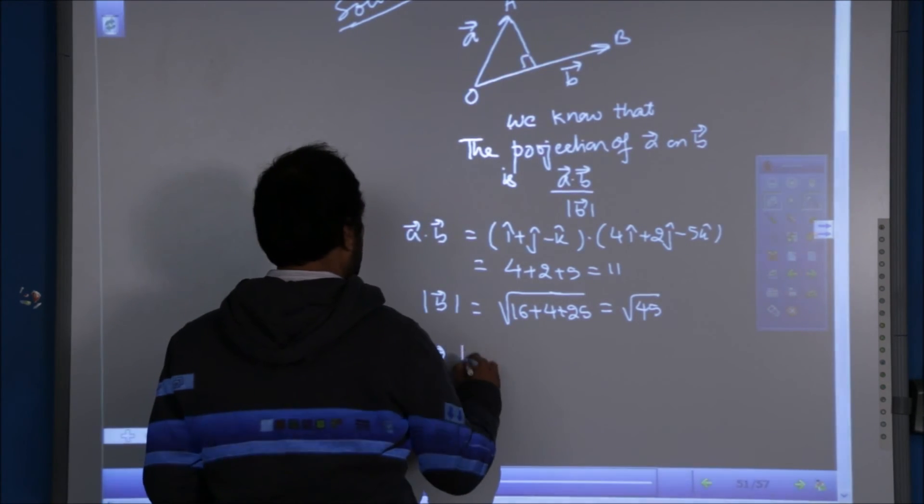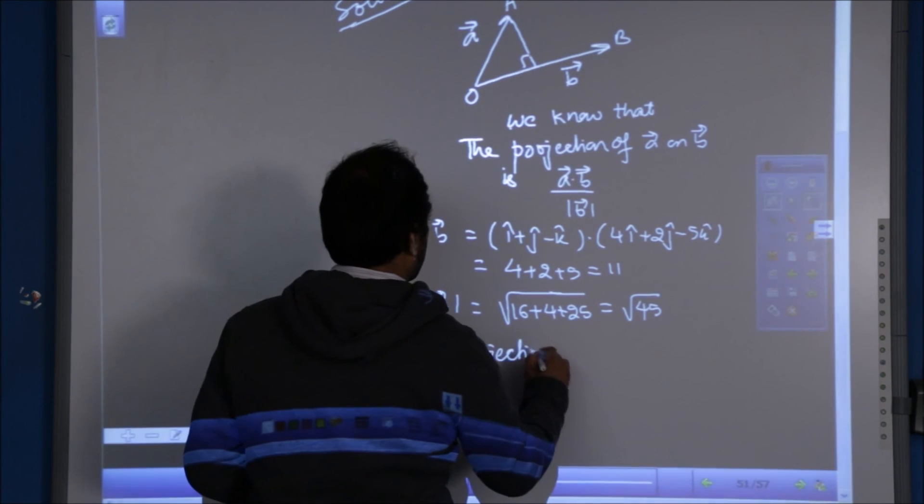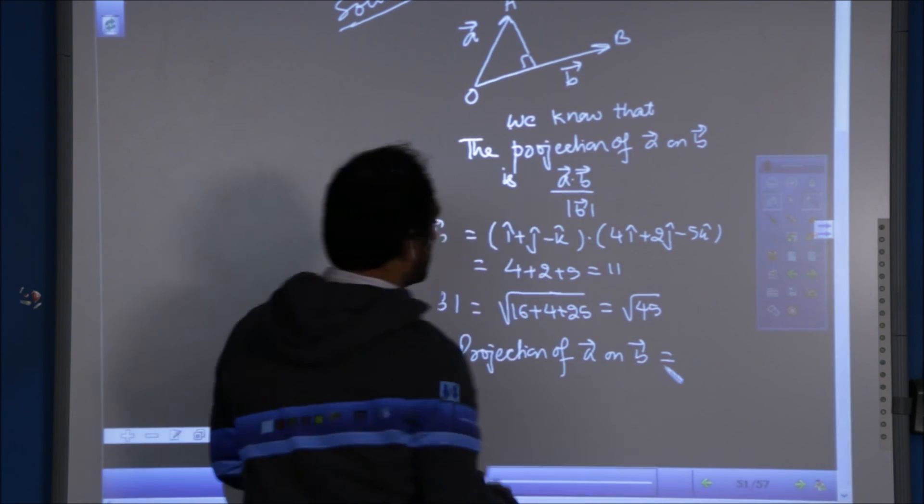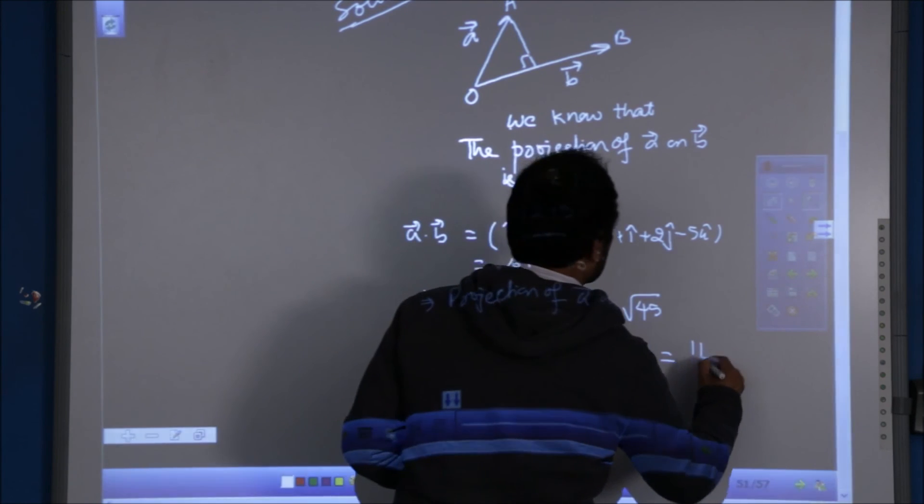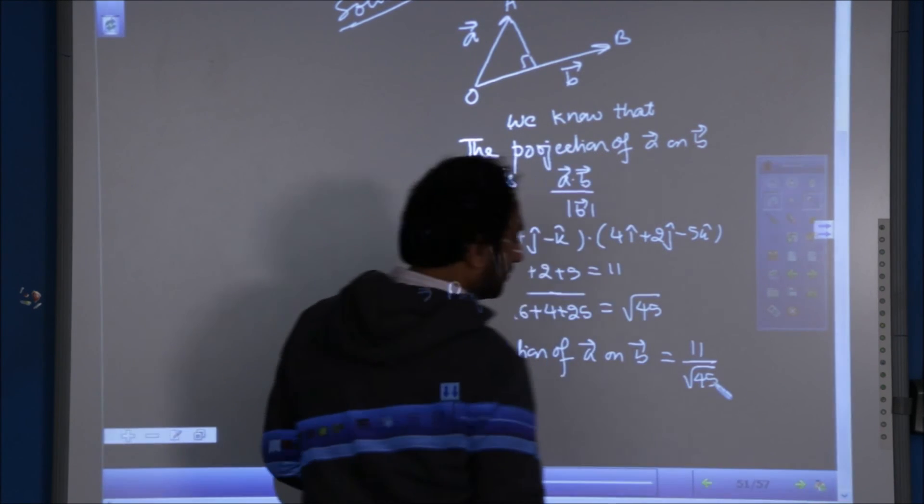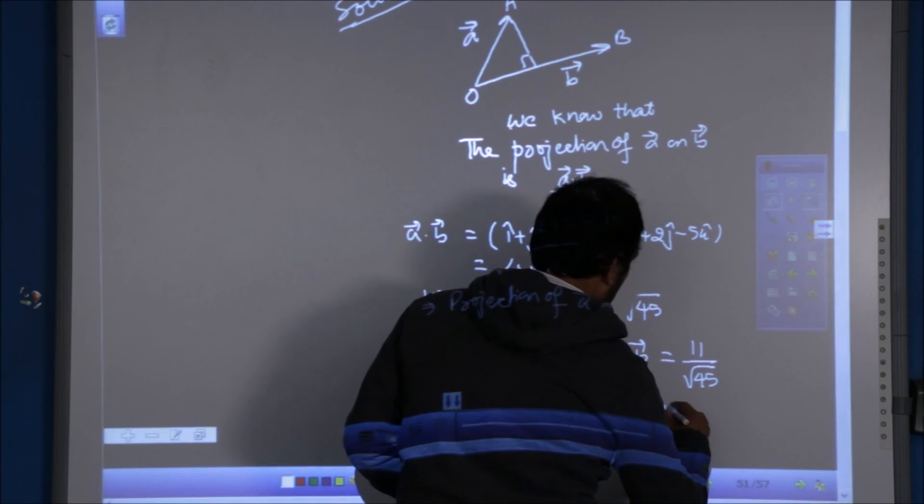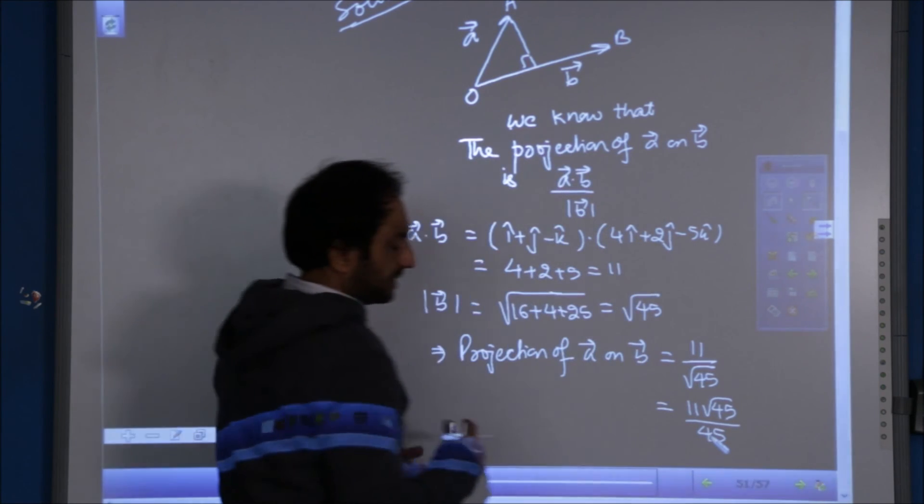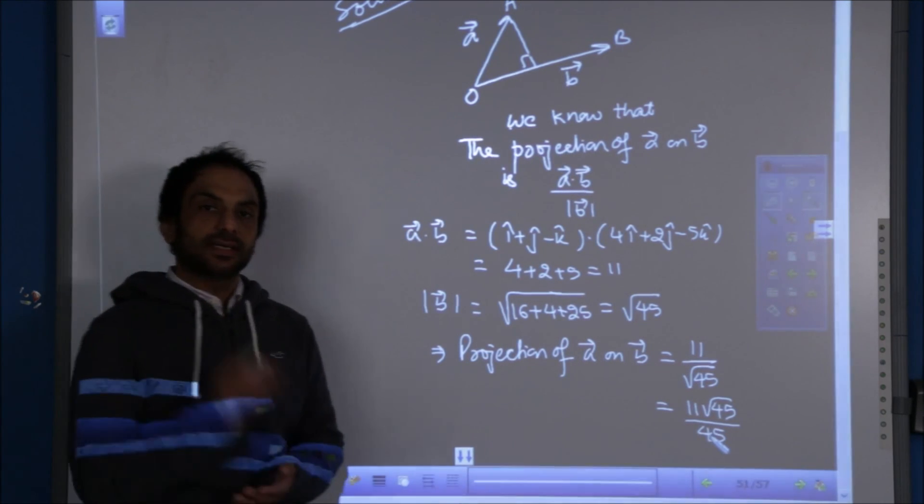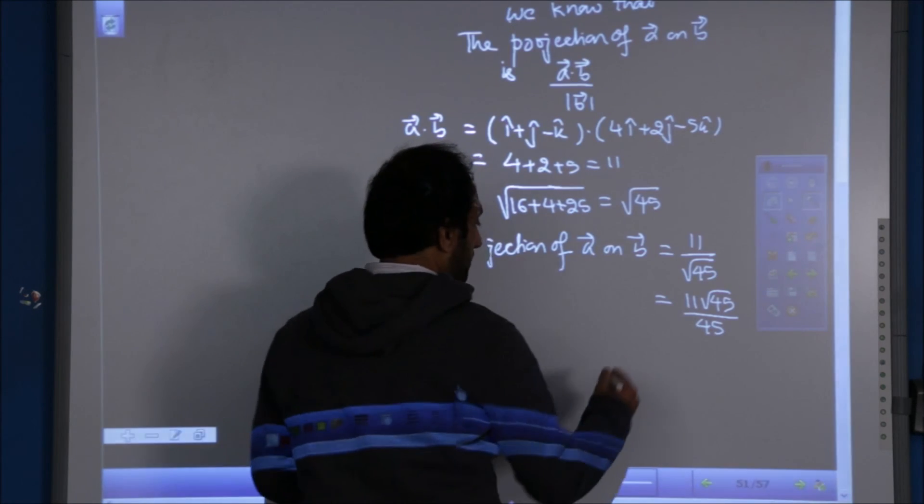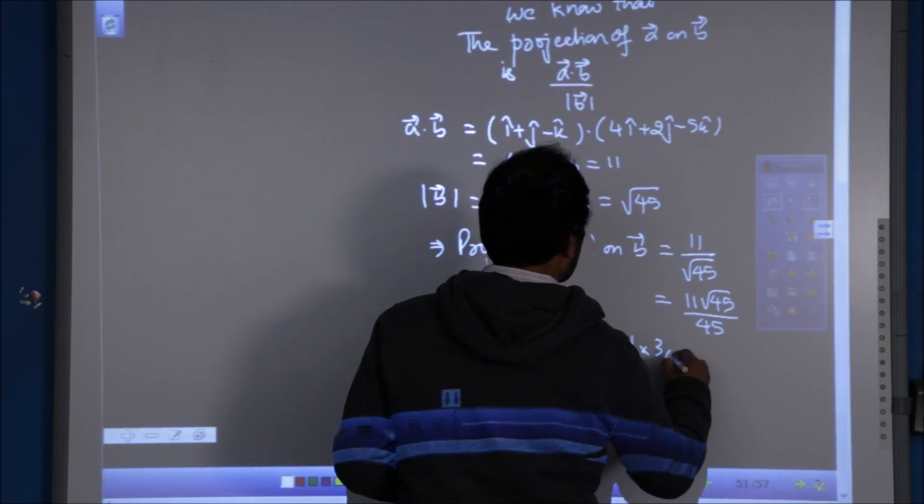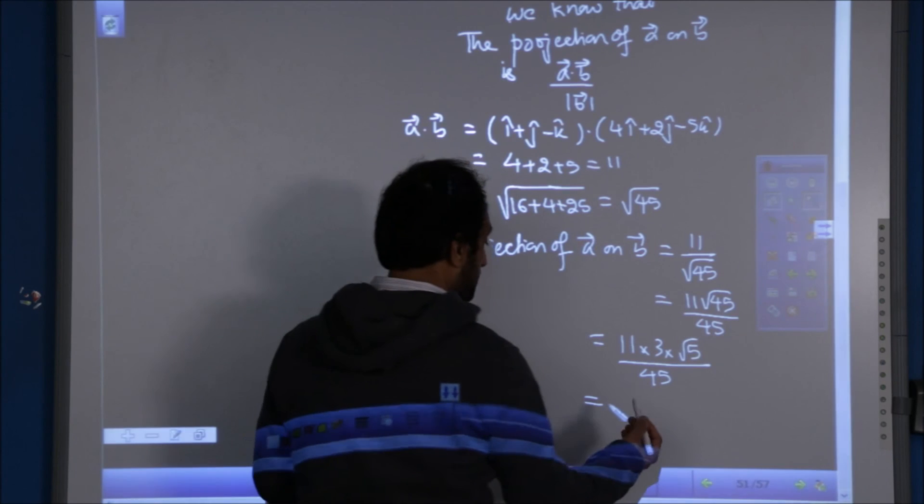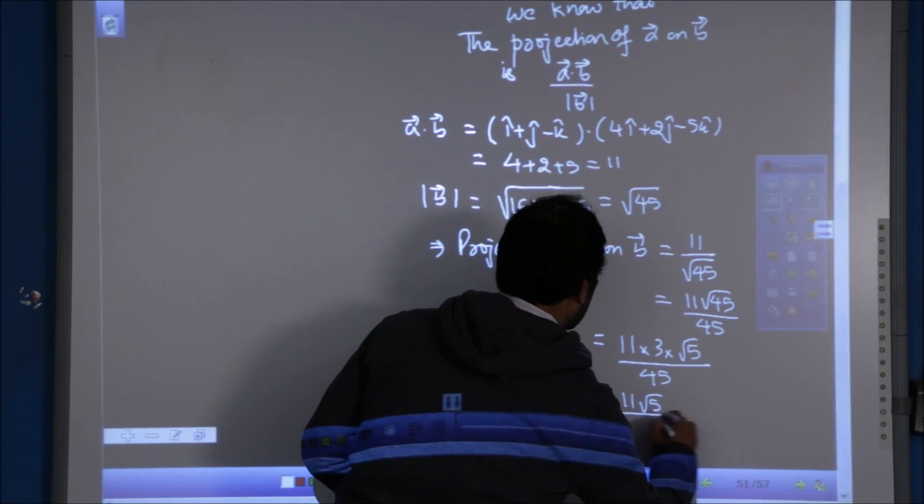And projection of A on B is equal to A dot B, which is 11, upon root 45, or it could be 11 root 45 by 45. And can we reduce 45? That is 9 into 5, and root 9 can be taken as 3. So it is 11 into 3 into root 5 divided by 45. So the answer turns out to 11 root 5 by 15 units.